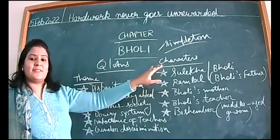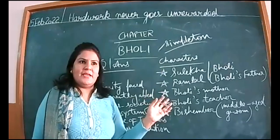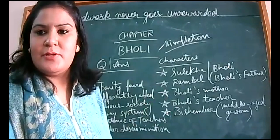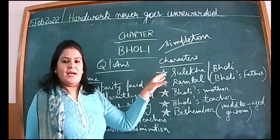When Sulekha was 10 months old, she fell from the cot and caught some injury on the brain. Due to that, she had problems in the motor functioning of her body. She was not able to speak properly — she spoke at the age of five, and when she spoke, she stammered. When she was two years old...